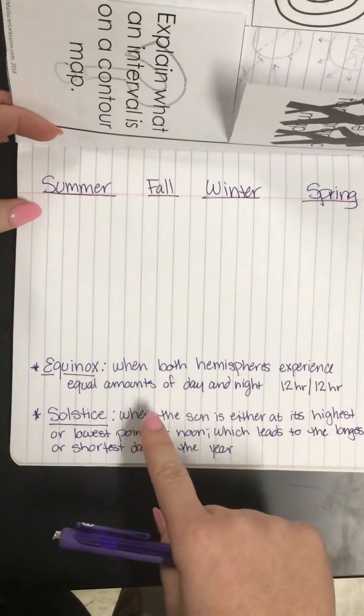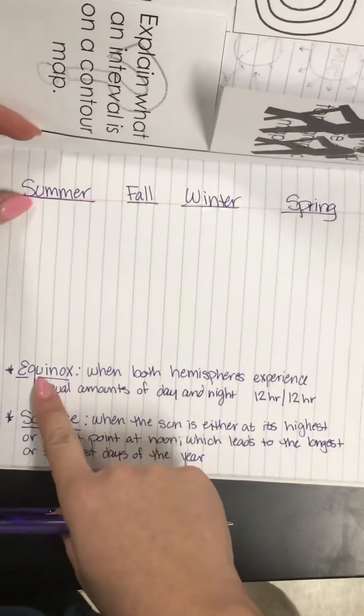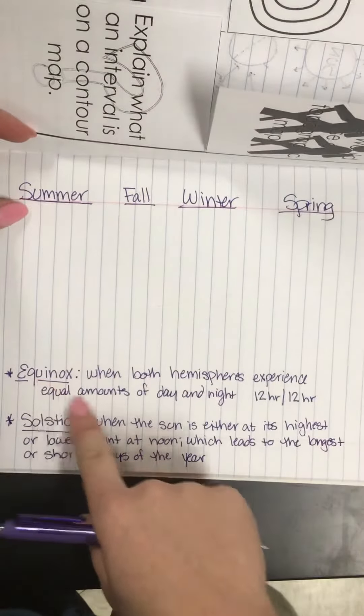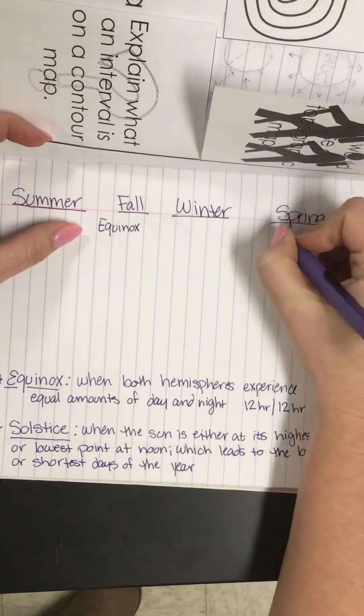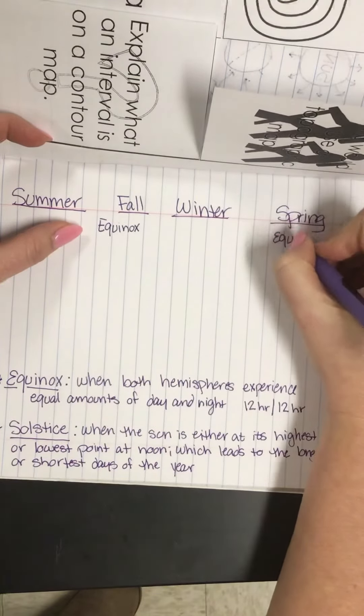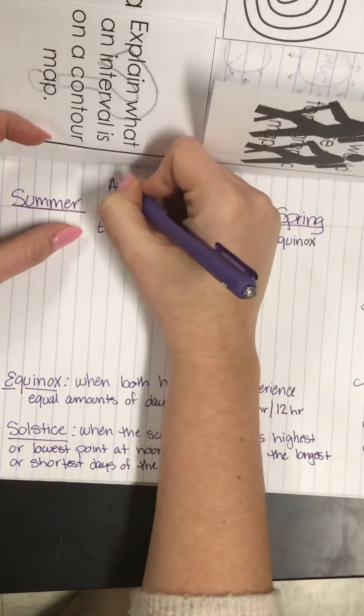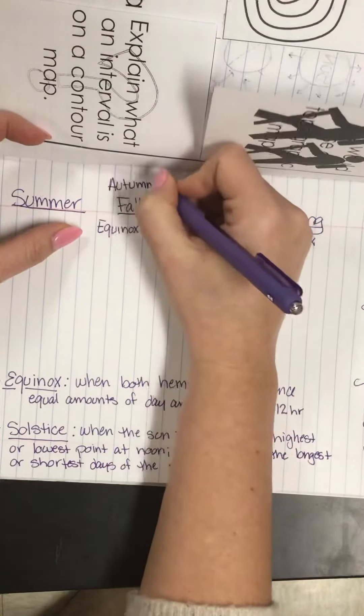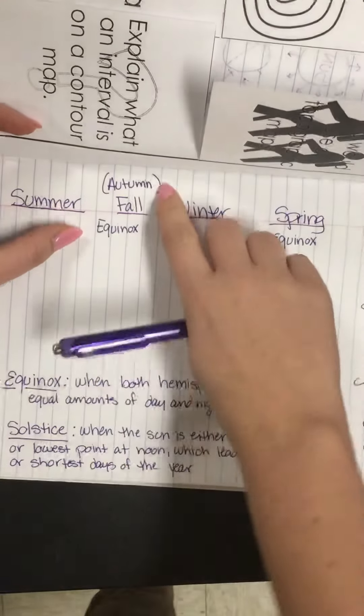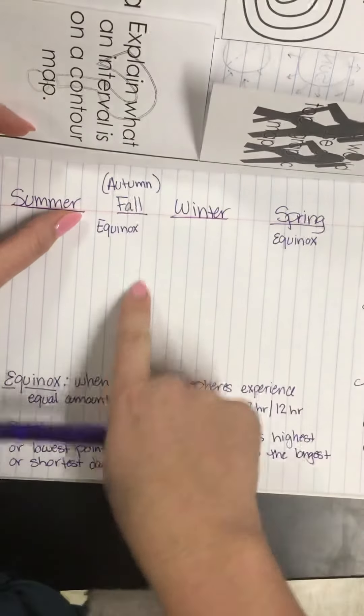When do we have an equinox and when do we have a solstice? Looking at our seasons — summer, fall, winter, spring — the equinox, with equal amounts of day and night, happens in fall and in spring. So we have a fall equinox and a spring equinox. Also keep in mind that fall and autumn are interchangeable, so you might see it called an autumn equinox.